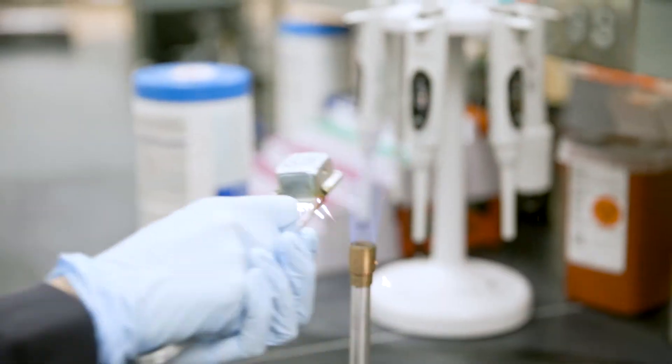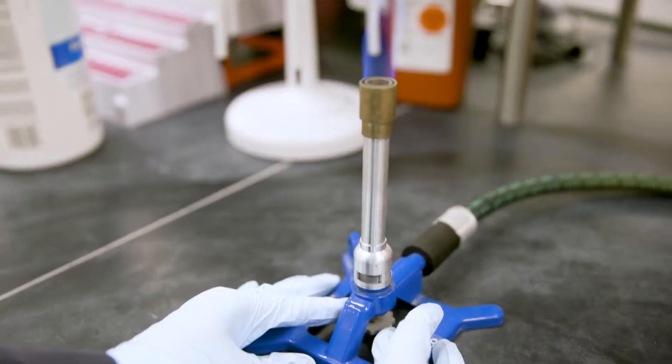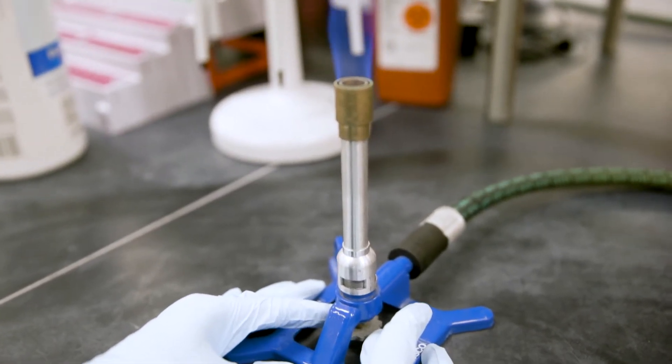Once you ignite your flame, you can adjust the gas flow using the gas valve at the bottom of the Bunsen burner.